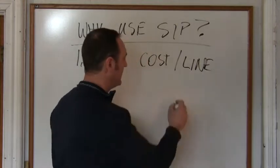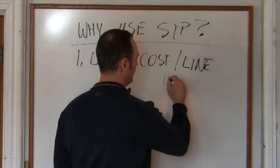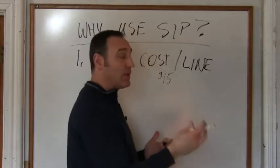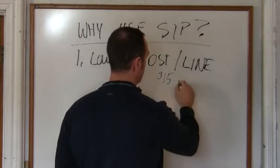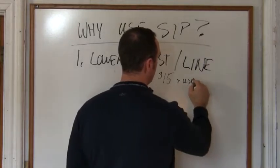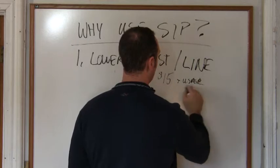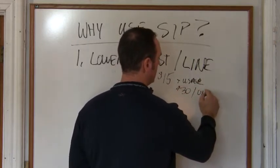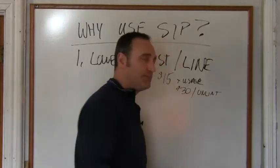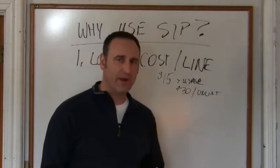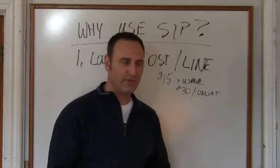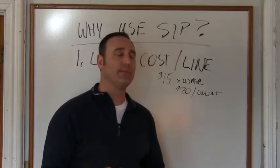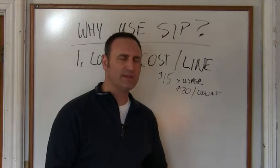So when you boil it down, it can go anywhere from $15, give or take a buck or two per trunk, plus the usage, up to $30, give or take, with unlimited usage. So when you compare that, sometimes it's on the order of $30-$40 a line from the phone company.